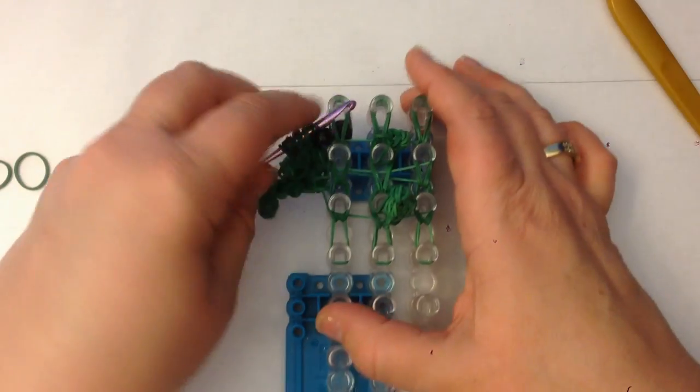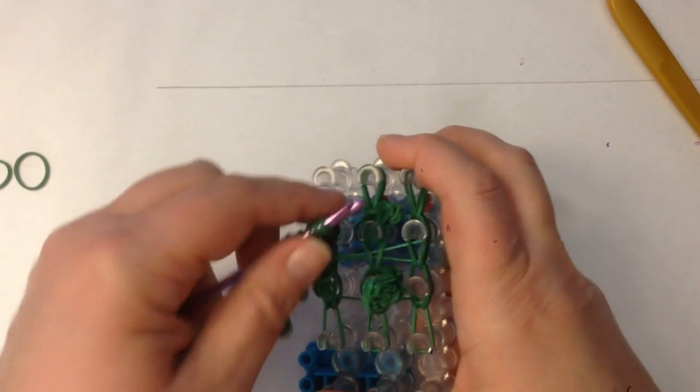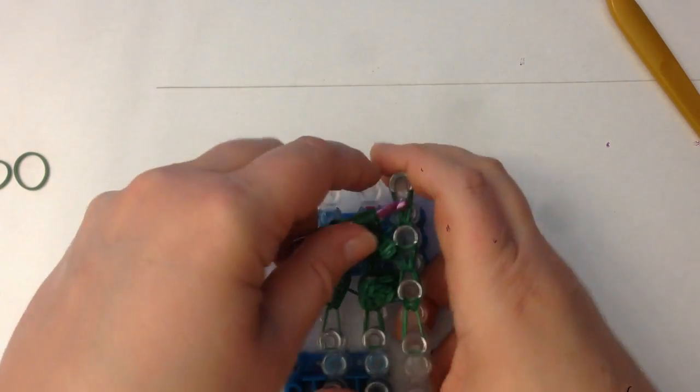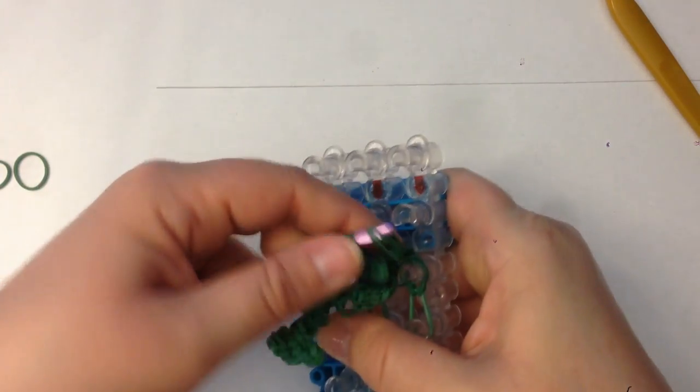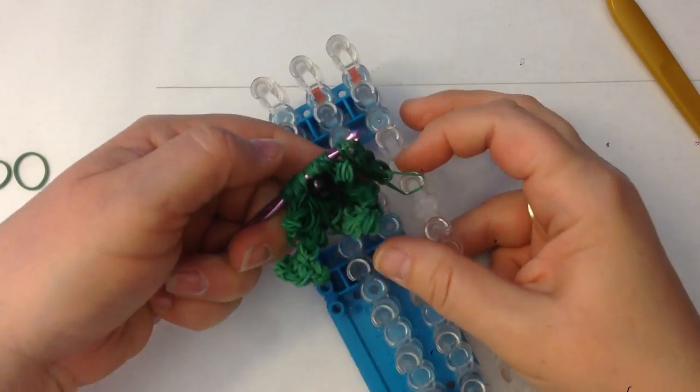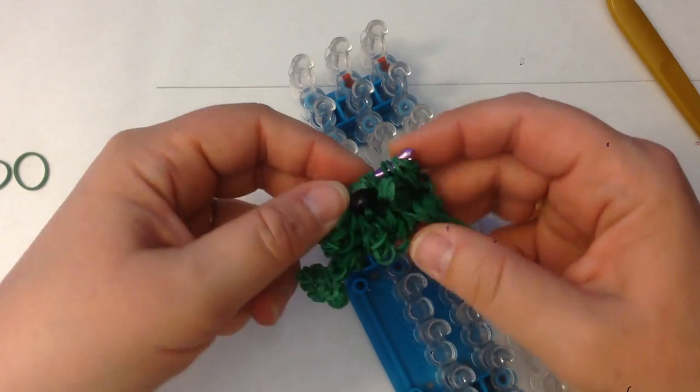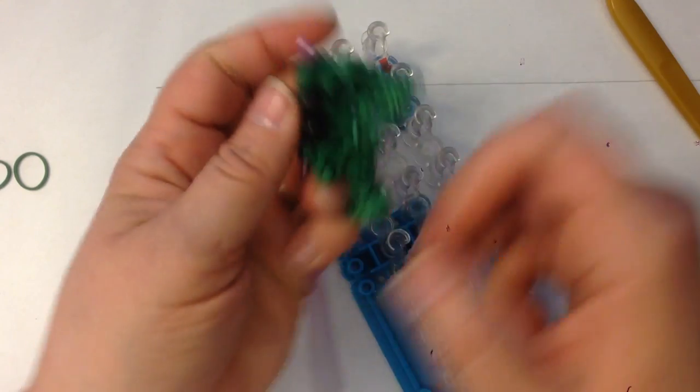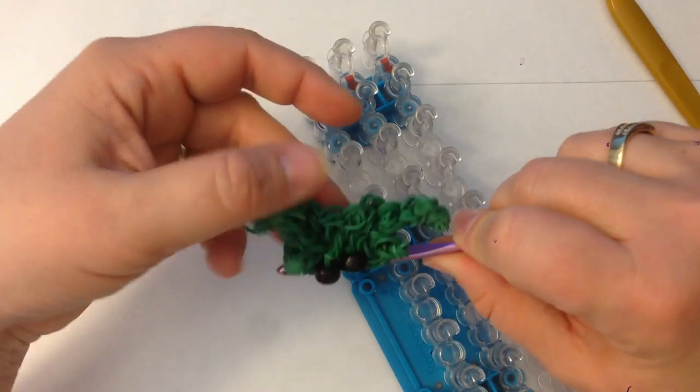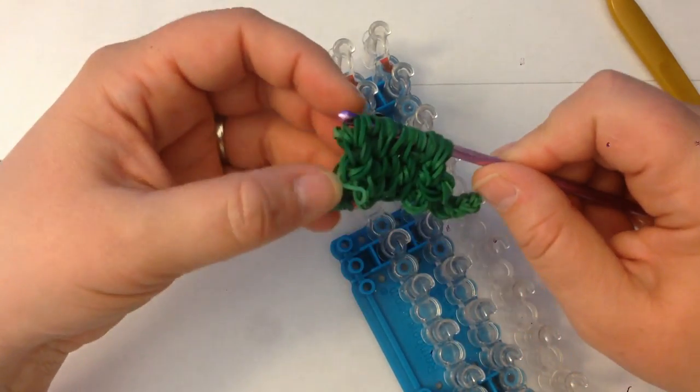Now, we're going to take this off the loom. Once, twice, and three times. Making sure that the arms and legs are all facing the same way. And this is how he's going to look. A bit like a squashed frog actually, isn't he?